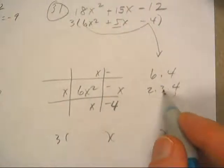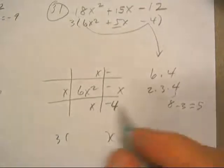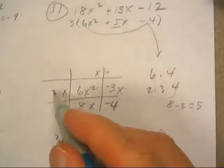So this is 8, and that's 3. 8 minus 3 is 5. So I put the 8 positive, the 3 negative, common factors.